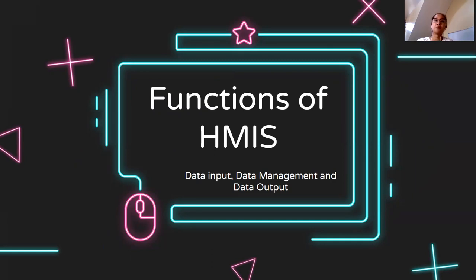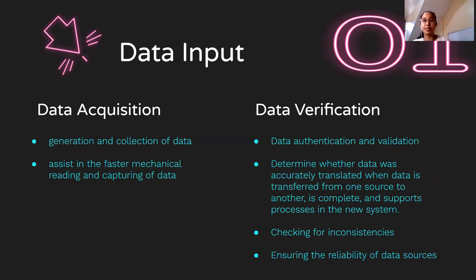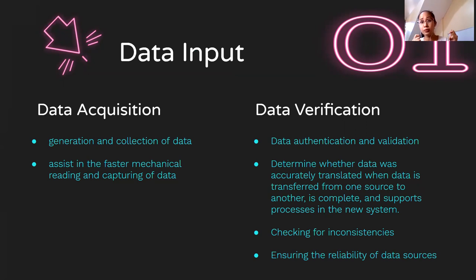The functions of HMIS: we have three major functions with sub-functions. We have data input, data management, and data output. For data input, we have data acquisition and data verification. Data acquisition means obtaining, generating, and collecting data — HMIS assists in faster mechanical reading and capturing of data. We should place proper standards in data acquisition to ensure the reliability of our data.